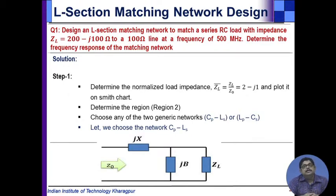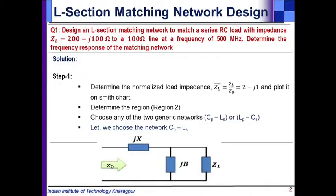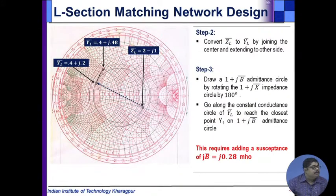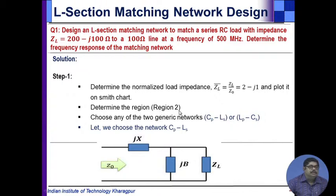The first step is to find out which region we are in, because based on that we will have the generic designs. We plot the normalized impedance, which comes to 2 minus j1. Plotting this on the Smith chart, we see that this point is in Region 2.